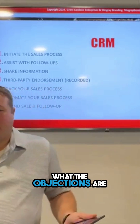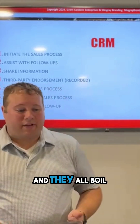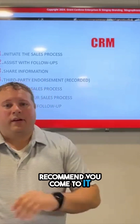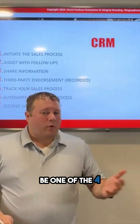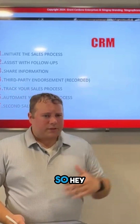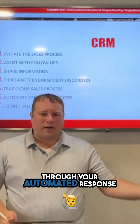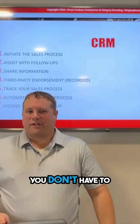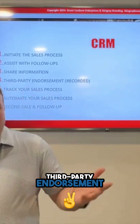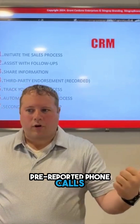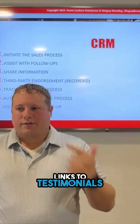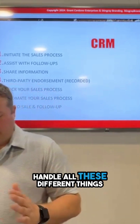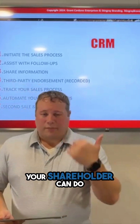Send over a media kit. You already know what the objections are — most business owners have them, and they all boil down to four things. We're going to cover those objections in the workshop. Go ahead and handle those objections through your automated CRM responses. Let your CRM address the objections so you don't have to. YouTube, third-party endorsements, pre-recorded phone calls, links to testimonials, links to video testimonials on YouTube — so many options. Your CRM can do it for you.